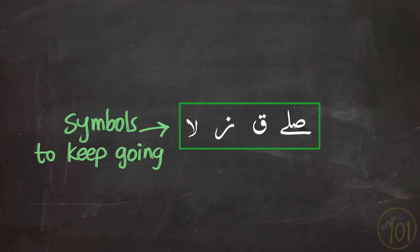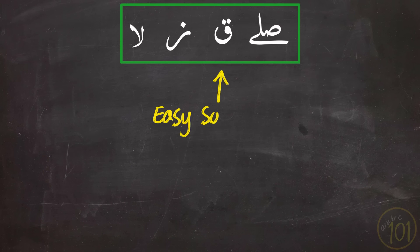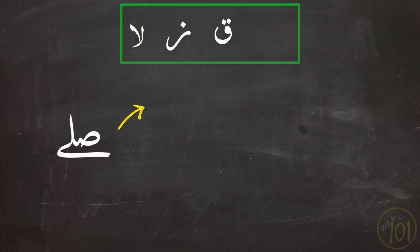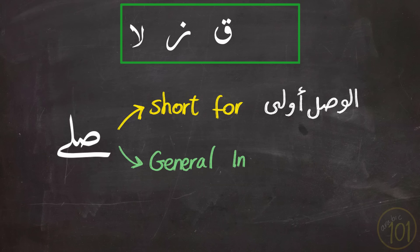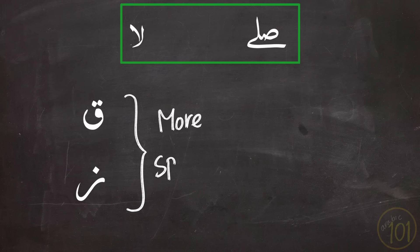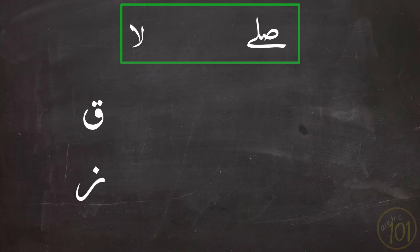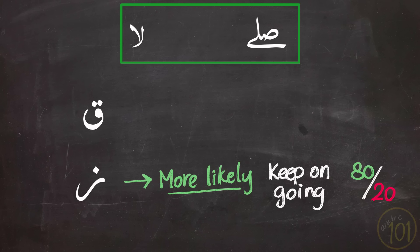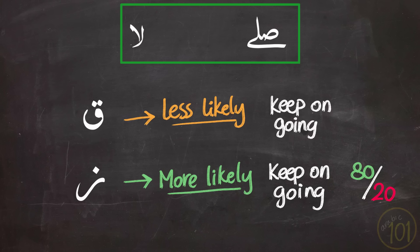The first set: all four of these symbols instruct you to keep on reciting, so the easier way is to treat them as the same thing and just keep on going. But there are minor differences. Soila, short for al-waslu awla, is a general instruction to keep on reciting. The symbols Zay and Qaf specify the degree: Zay means you should more likely keep on going — roughly 80% go, 20% don't. Qaf means you are less likely to keep going, around 60% to 40%. But if you see either of these, don't stop.